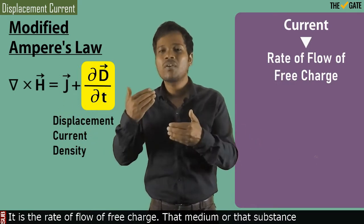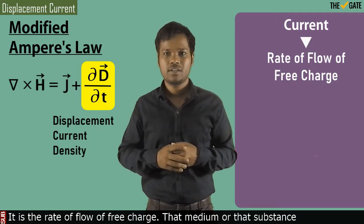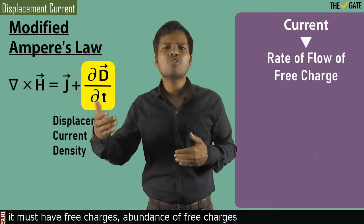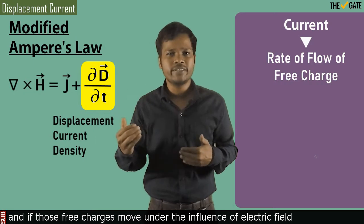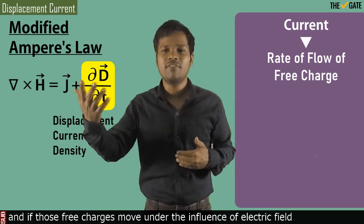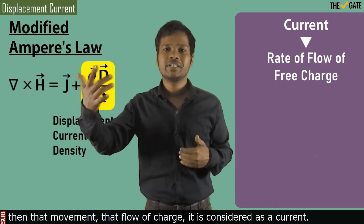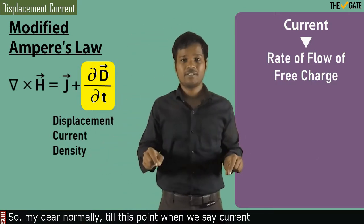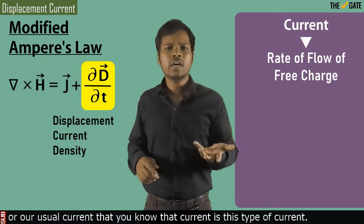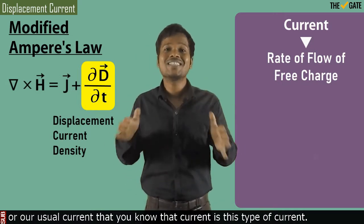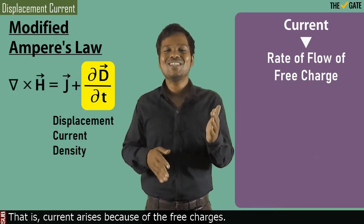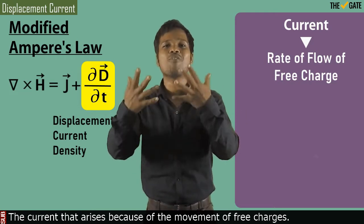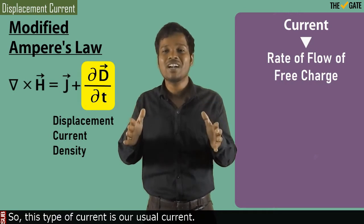How do we define current? It is the rate of flow of free charge. That media or substance must have free charges, abundance of free charges. And if those free charges move under the influence of an electric field, then that movement, that flow of charge, is considered as a current. So normally, until this point, when we say current or our usual current, that current is this type — current arises because of the movement of free charges.